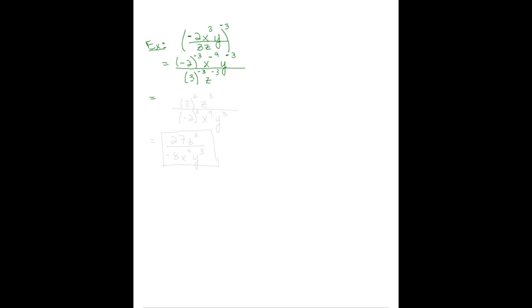Now we can simply reverse everything if we'd like to. That means everything will reverse. What's in the denominator goes to the numerator: 3 cubed, z cubed, over negative 2 cubed, keep that negative, x to the 9th, y cubed.